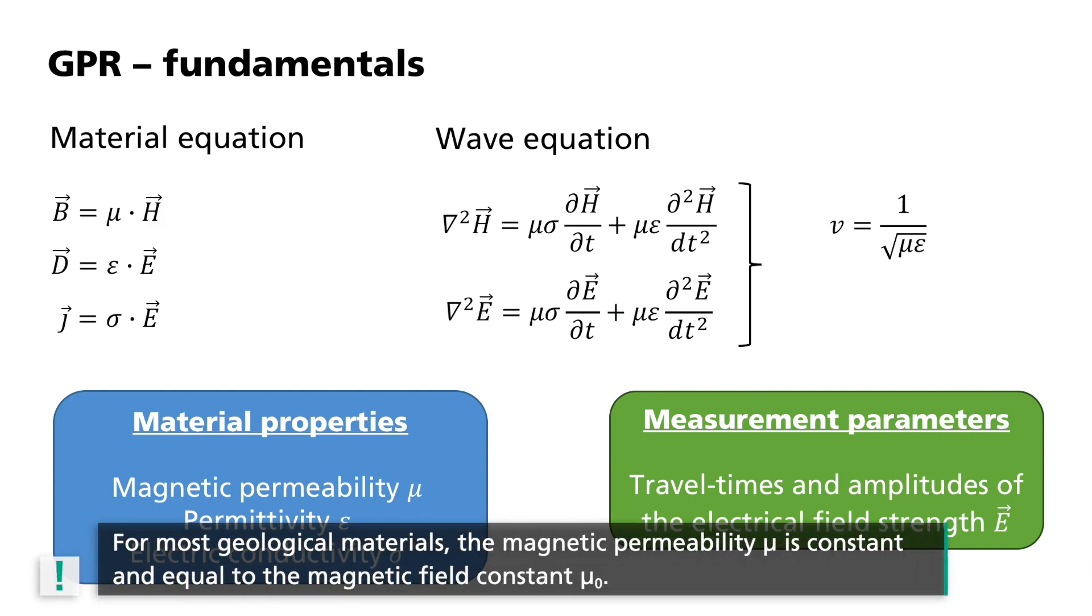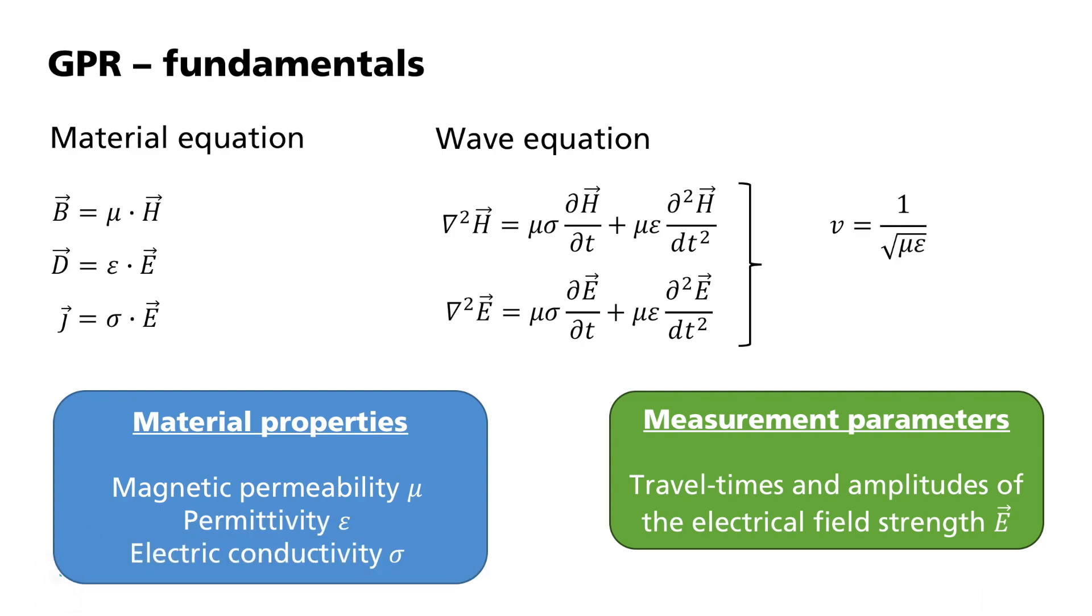For most geological materials, the magnetic permeability mu is constant and equal to the magnetic field constant mu zero. Typical velocities for radar waves range from 6 cm per ns in water-saturated sand and clay to 15 cm per ns in dry sand or granite. In a vacuum, both the material-dependent parameters mu and epsilon are replaced by the magnetic and electric field constant mu zero and epsilon zero. Propagation then takes place at the speed of light c.